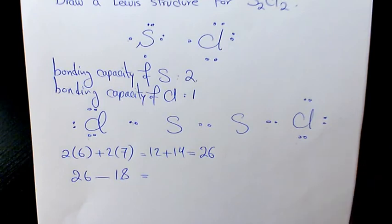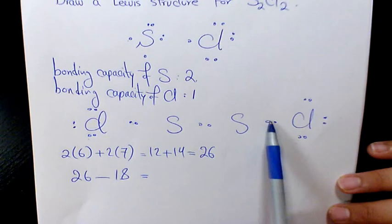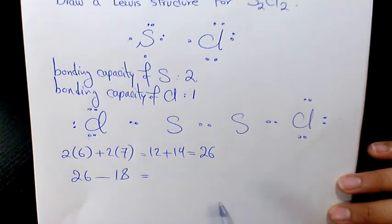Let's check it one more time: one, two, three, four, five, six, seven, eight, nine—nine times two is 18. So 26 minus 18 equals 8. That's the total number of available electrons.